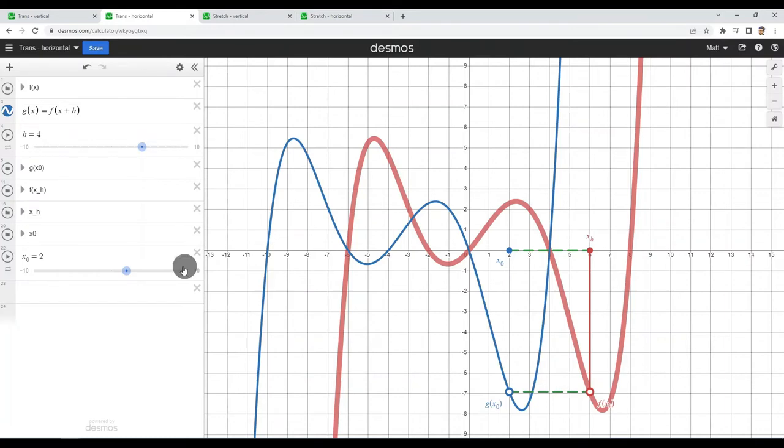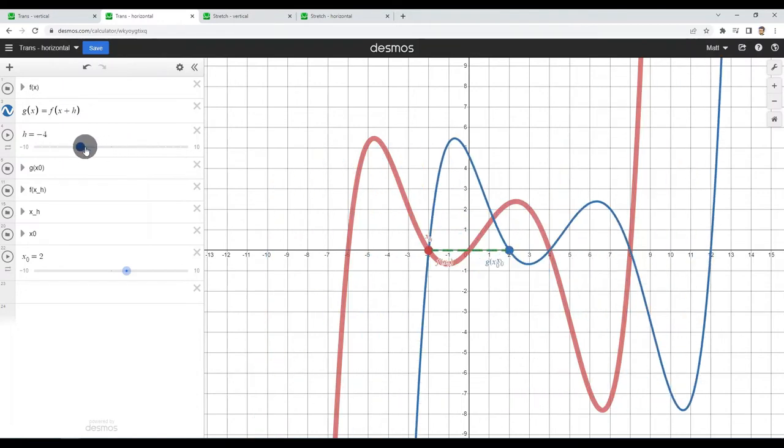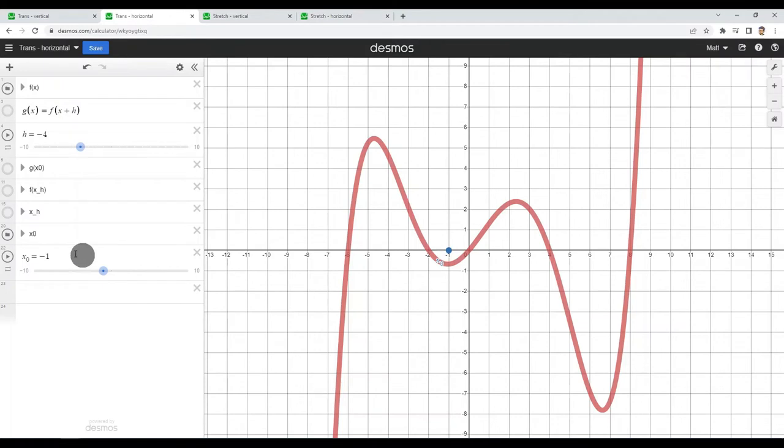That's how I like to think of that graph or this process. And then if h is negative, the opposite is happening. I am shifting, let's put ourselves right here at negative one.